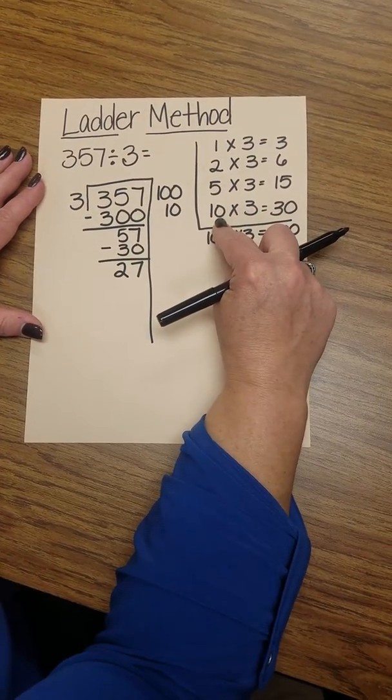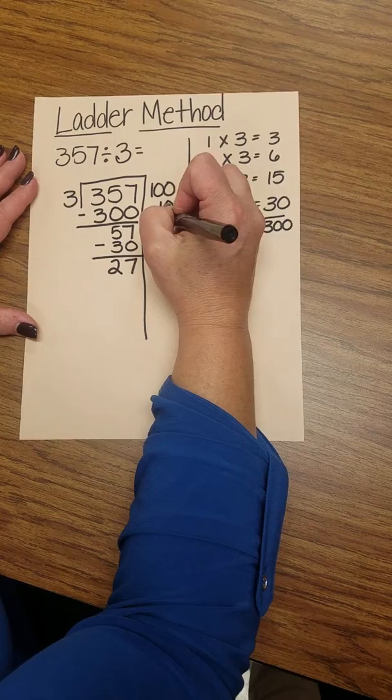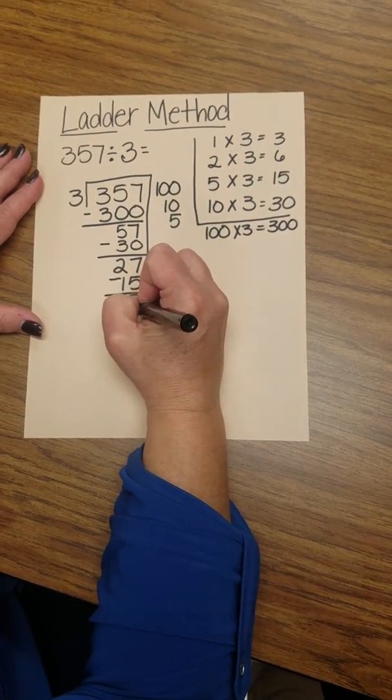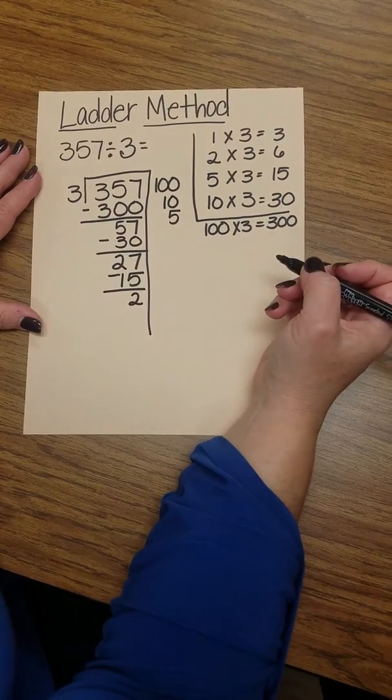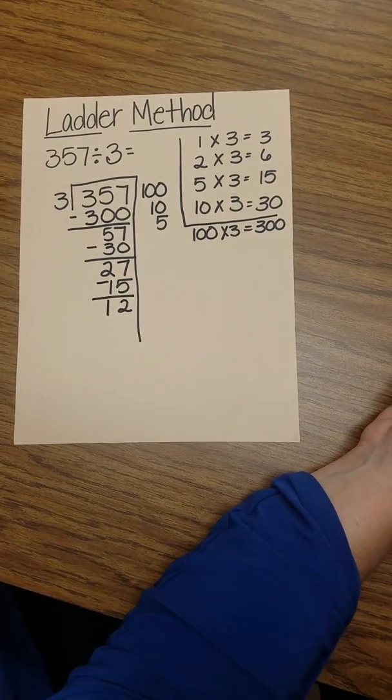So I notice I can't use 10 again, so then I'll use the 5. Subtract 15 because 3 times 5 is 15. That leaves me with 12.